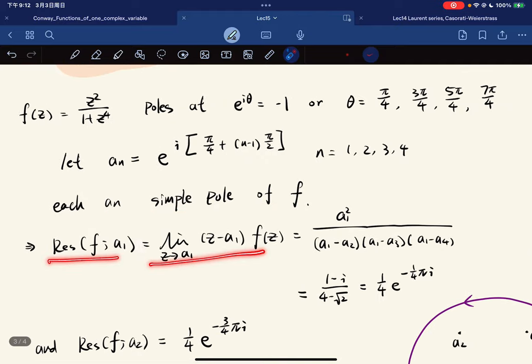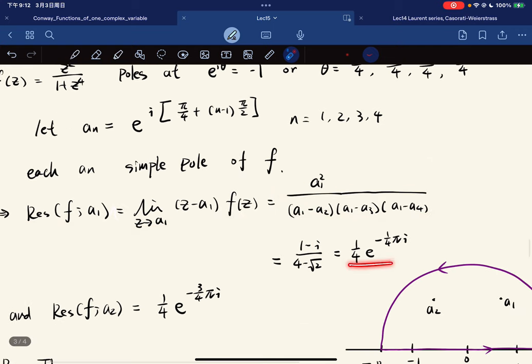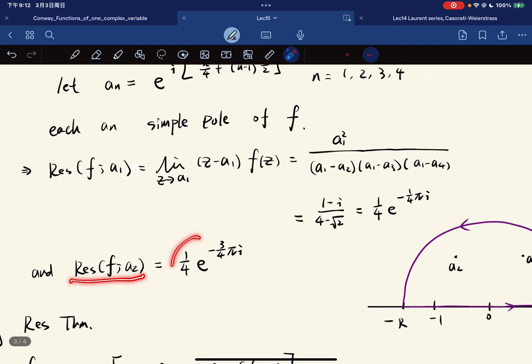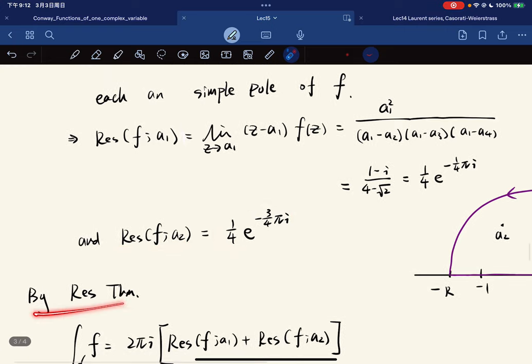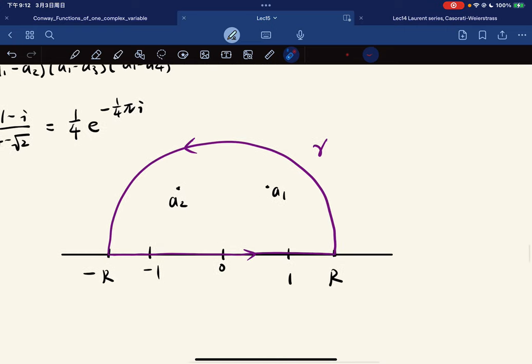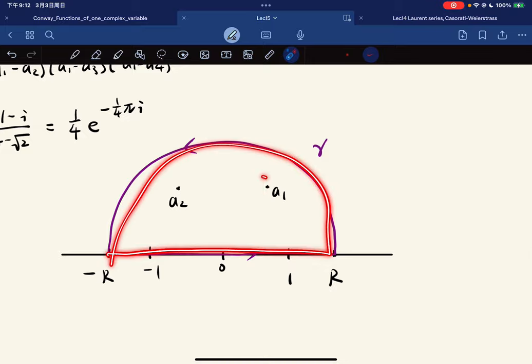It's a simple pole, okay. So the residue, which is equal to this, which is equal to this, we should simplify, gives this number. And the residue of a2 is equal to this.